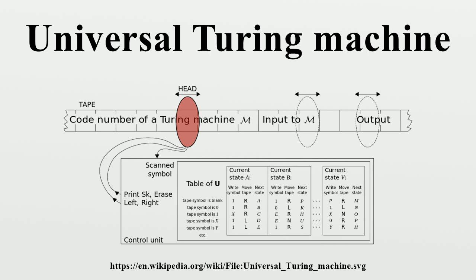Thus we can construct a Turing machine that expects on its tape a string describing an action table followed by a string describing the input tape, and computes the tape that the encoded Turing machine would have computed. Turing described such a construction in complete detail in his 1936 paper. It is possible to invent a single machine which can be used to compute any computable sequence.